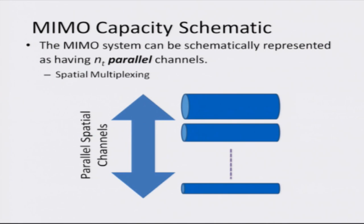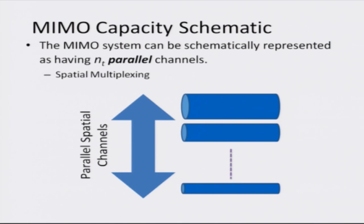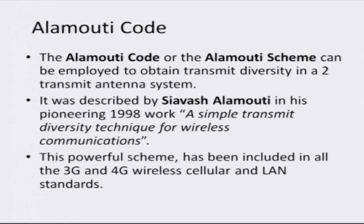This is achieved through what is known as spatial multiplexing, where multiple antennas at the transmitter and receiver create multiple modes or parallel spatial pathways to simultaneously transmit multiple streams of information. This is known as spatial multiplexing.